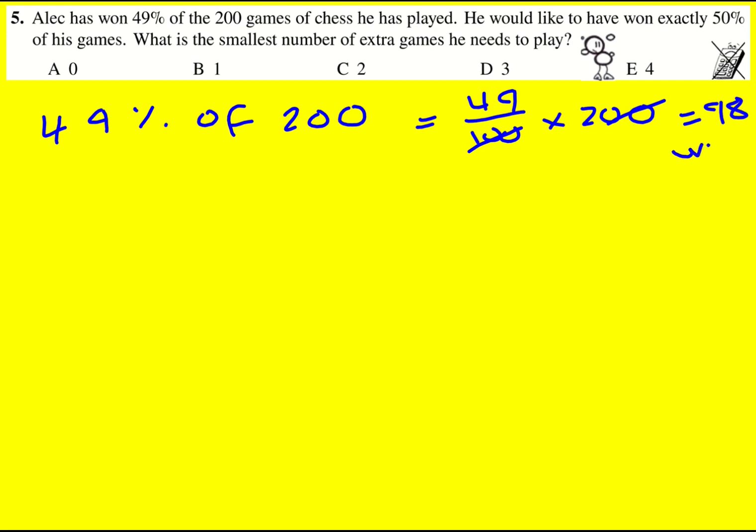So that means he won 98 and he must have lost 102. So to get exactly 50% in the smallest number of games possible, he's going to need to have won 102 and lost 102. So we know all the remaining ones and that just means winning four. So the answer is going to be four.